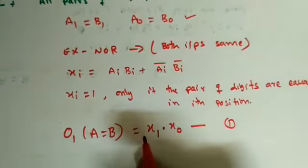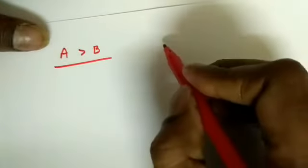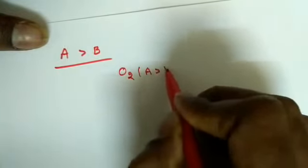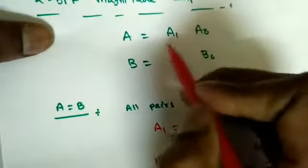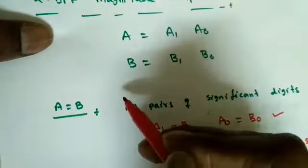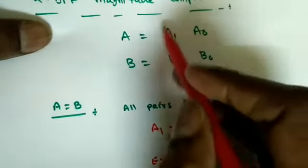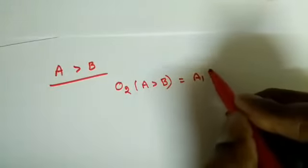Next we will see the less than and greater than conditions, which require checking relative magnitude. For A greater than B, we check A1 and B1. The output O2 (A greater than B): A1 must be greater than B1 — in digital, this means A1 is one and B1 is zero, represented as A1·B1_bar.